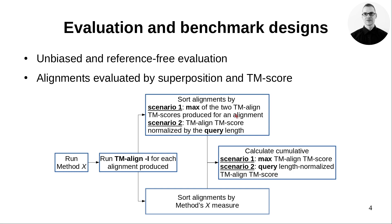And here we have two scenarios. According to the first scenario, the greater TM-Score of the two, normalized by the query and reference lengths, is used — here all structural similarities are taken into account. According to the second scenario, the TM-Score normalized by the query length is used, which neglects alignments with a reference much shorter than the query. Finally, once the alignments have been sorted, calculate the cumulative TM-Score, which provides a measure of how accurately a method produces alignments and their rate.